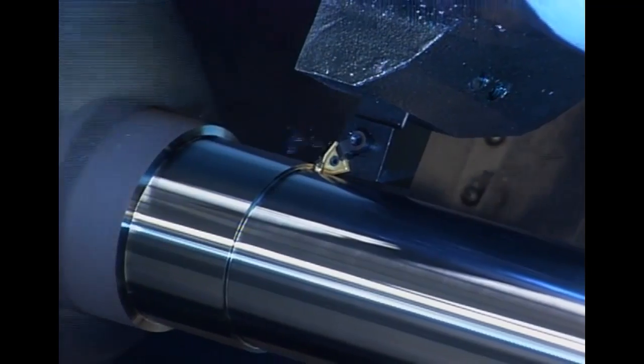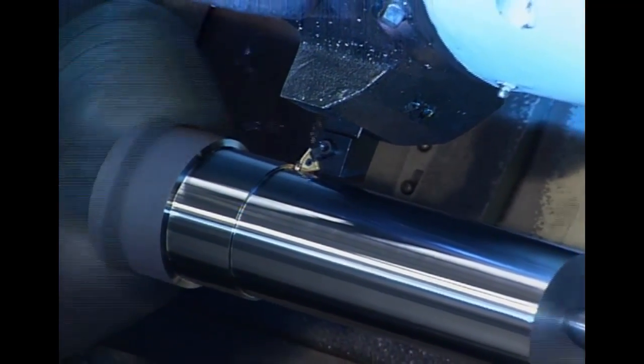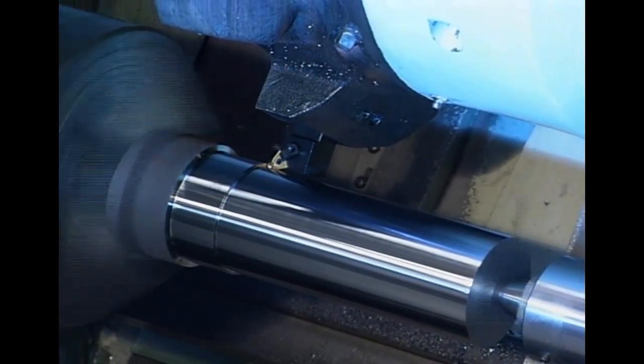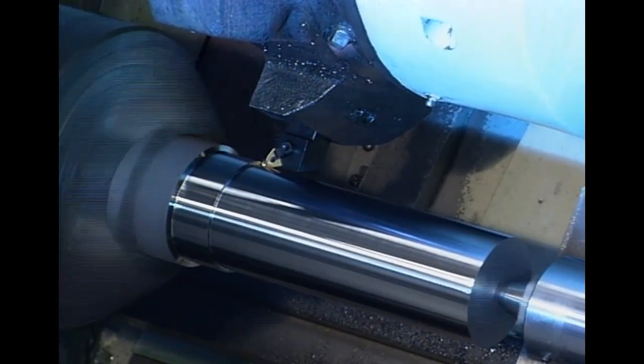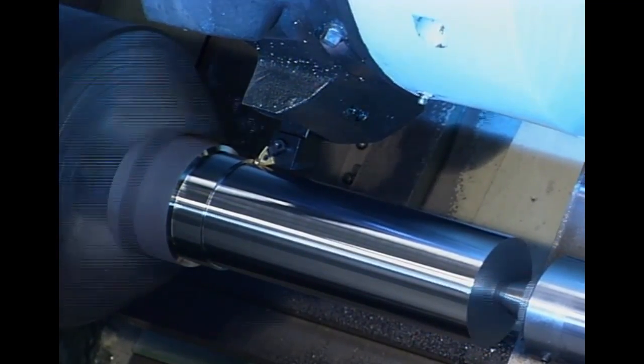The purpose of the edge and its geometry is to create a chip. The right geometry creates chips cleanly and efficiently. The wrong geometry may not cut at all or cut poorly, fail prematurely or damage the workpiece surface.